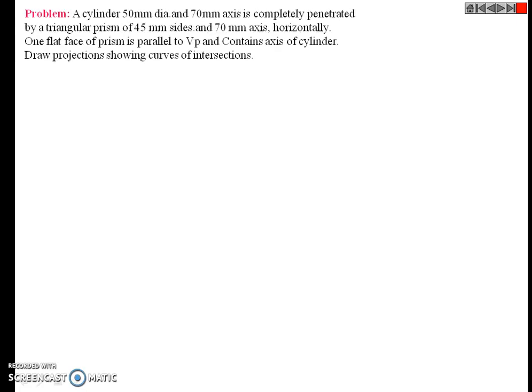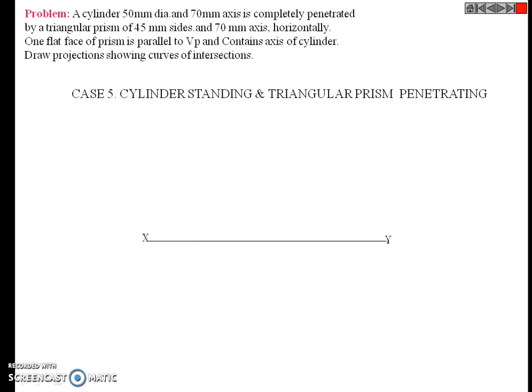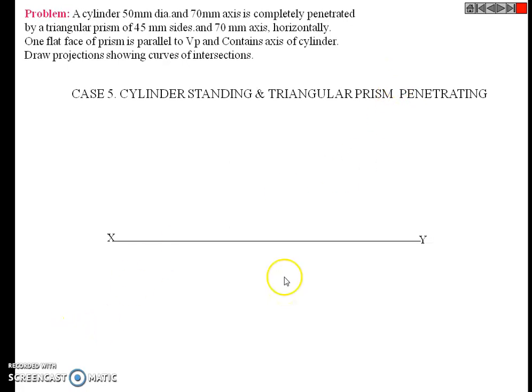Hello students, we briefly revisit this problem again. This is a problem case with a cylinder standing and a triangular prism penetrating. I have two solids here: a vertical cylinder and a triangular prism intersecting.